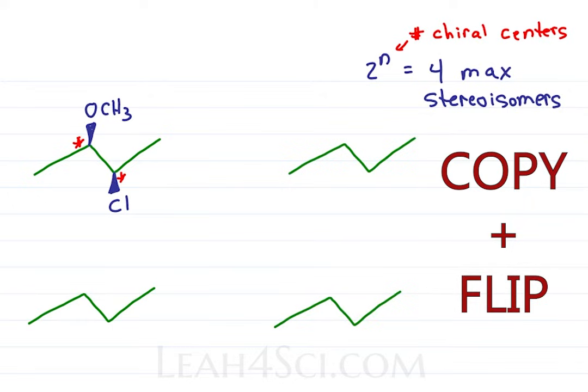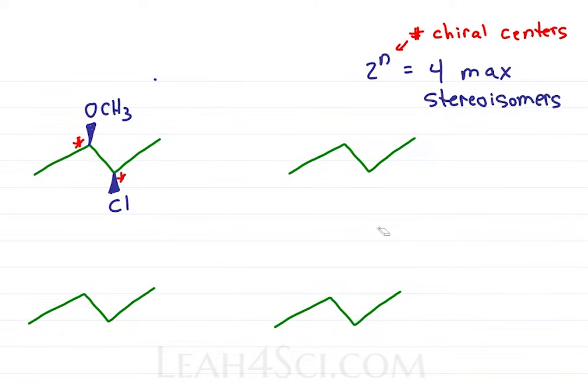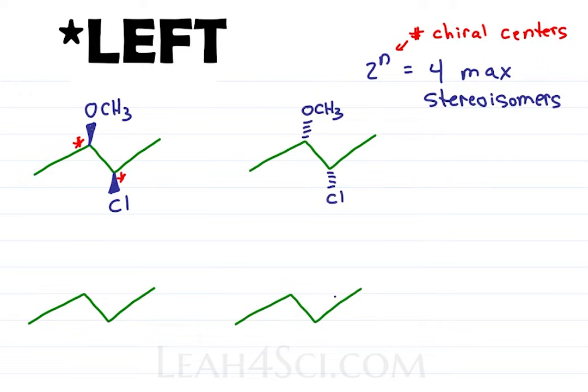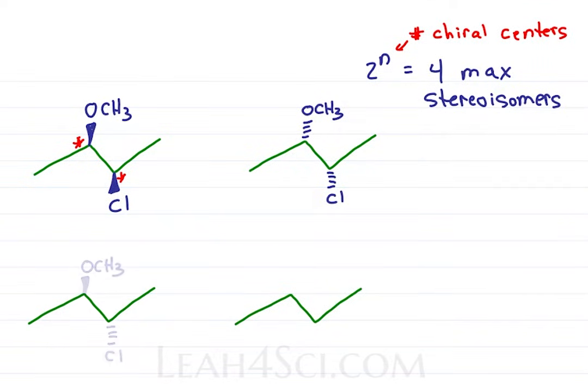I start with the skeletons and then I copy the substituent and flip the chirality. On the right, the starting molecule has two wedges so we put both substituents on dashes. For this next one, I'll keep the first substituent the same and flip the other and then find its mirror by flipping both. Wedge becomes dash and dash becomes wedge.